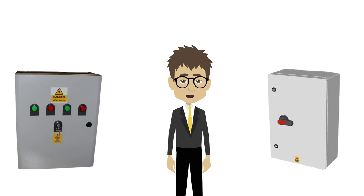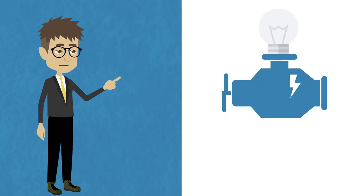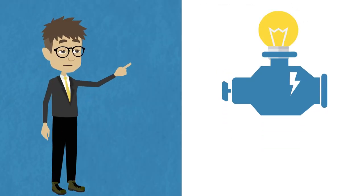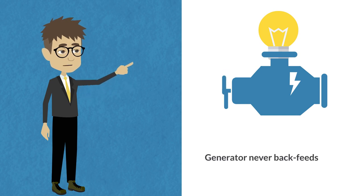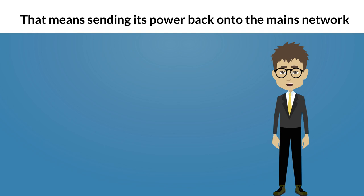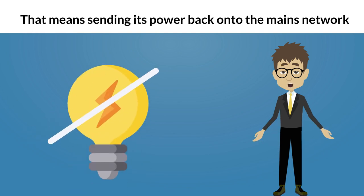Both types perform the same basic but important function, making sure the electricity from the generator and the mains never meet and that the generator never back feeds. That means sending its power back onto the mains network in the event of a power failure.